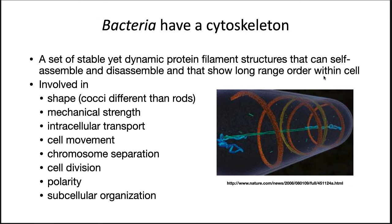Bacteria have a cytoskeleton. While the structure of the cytoskeleton is not visible in the microscope, bacteria do have one. It is a set of stable yet dynamic protein filament structures that can self-assemble and disassemble and show long-range order within the cell. The cytoskeleton is involved in shape — making cocci different from rods — mechanical strength, intracellular transport, cell movement, chromosome separation, cell division, and polarity. Polarity refers to determining where the ends of the cells are located.